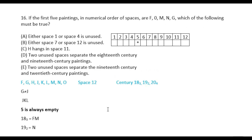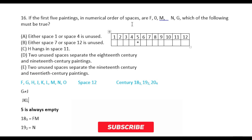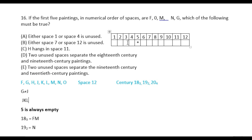If the first five paintings in numerical order of spaces are F, O, M, N, G, which of the following must be true? F, R, M is 18th century, which means O is also 18th century. N is 19th century. So 18th century is F, O, M and 19th century includes N. Which of the first two paintings — F, O, M, N, G — must be 18th century? That confirms the 18th century arrangement.